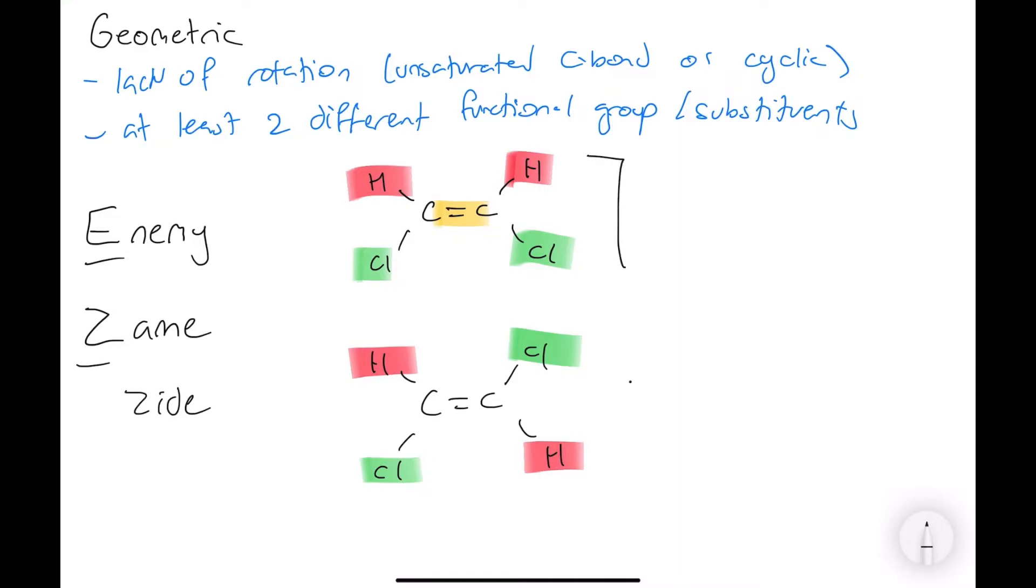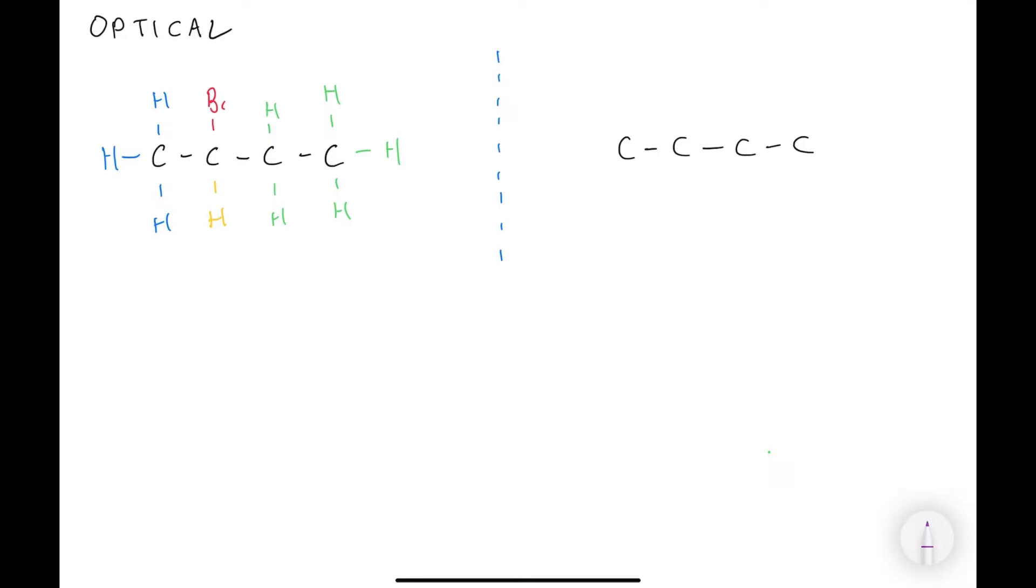So as the substituents here are at the same side, we'll call it Z-dichloroethene. And as they are in opposites over here, this is E-dichloroethene. And it's that simple. I guess the main bit is trying to recognize if a molecule has this. And if you see a lack of rotation and at least two different functional groups, it likely has this isomerism.